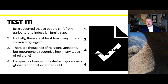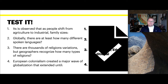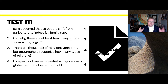Each video has a 'test it' section with four quick questions from the reading and videos. Question one: as people shift from agriculture to industrial, what happens to family sizes? Question two: globally, there are at least how many different spoken languages? Question three: geographers recognize how many types of religion? And question four: European colonialism created a major wave of globalization — that extended until when?